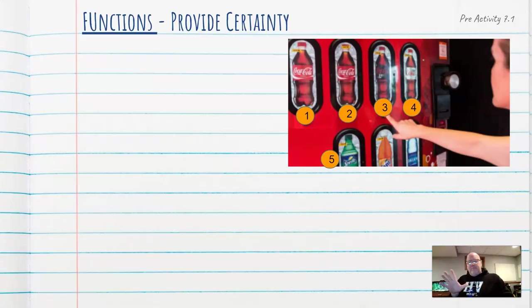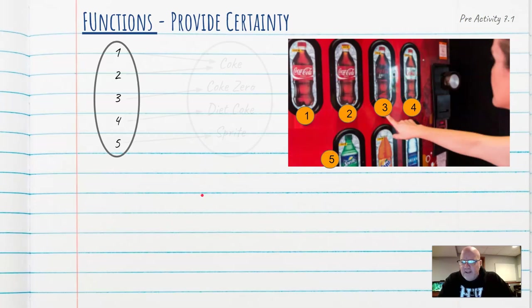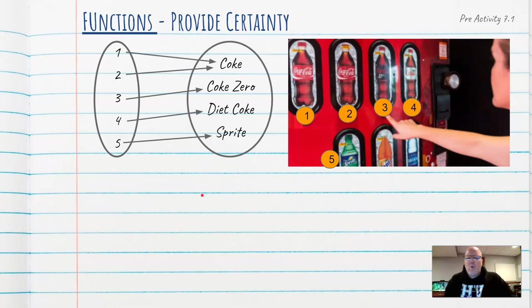Let's take another example here. Here's a Coke machine. We've all seen Coke machines like this. Button one and button two are going to give me a Coke. Button three is going to give me a Coke zero. Button four is going to give me a Diet Coke. And button five is going to give me a Sprite. Is there certainty here? When I hit a button, do I know exactly what soft drink I'm going to get? As long as the machine is working properly, the answer is yes.